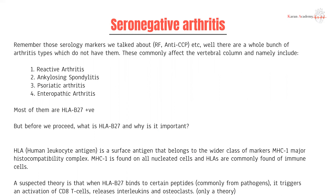The four main ones you need to know are reactive, ankylosing spondyloarthritis, psoriatic, and enteropathic. Most of them are HLA-B27 positive. Now don't get this confused with the serology marker — yes, it is seronegative, but is positive for HLA-B27.